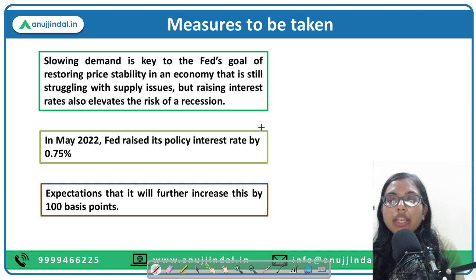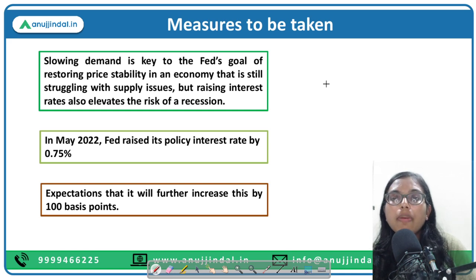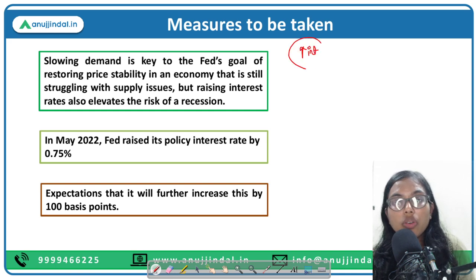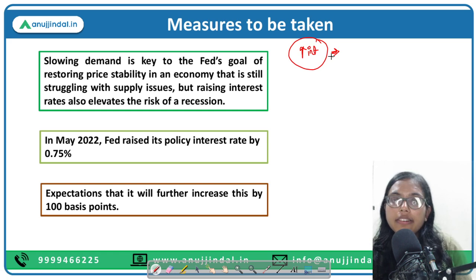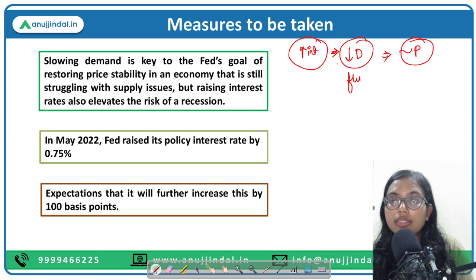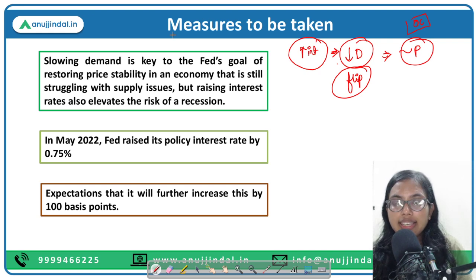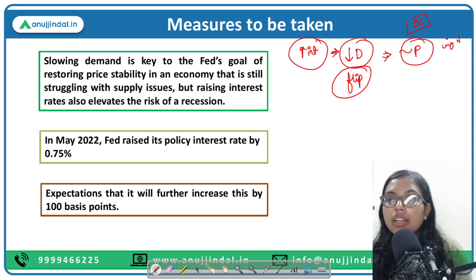Now let's talk about the solution — what measures can be taken to tame inflation and reduce its impact on the economy. The first and foremost thing that the central bank across nations does is increase the interest rate. Whenever you increase the interest rate, you are making loans costlier. By increasing the interest rate, you are trying to decrease the demand, and by decreasing the demand you can maintain price stability. But there is a flip side — there is always an opportunity cost for any monetary policy intervention.